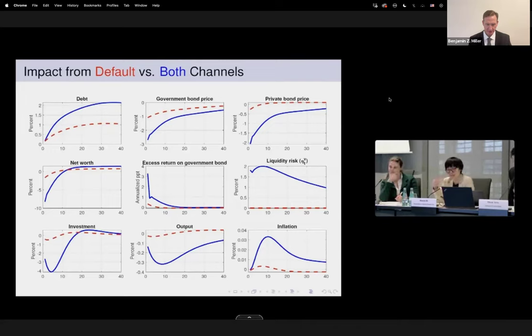Centeno posits that a gradual and measured approach to rate cuts would afford economic agents the necessary time to adapt, suggesting that steps of 25 basis points could represent a pragmatic metric. His insights emphasize the importance of not delaying policy adjustments unduly, which could otherwise resemble more of a tactical game rather than prudent monetary policy.